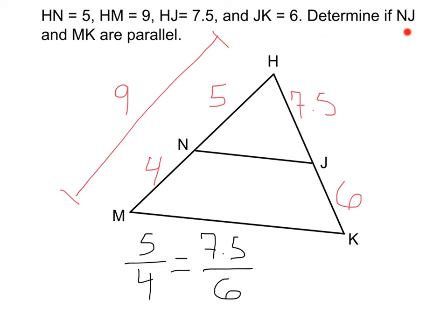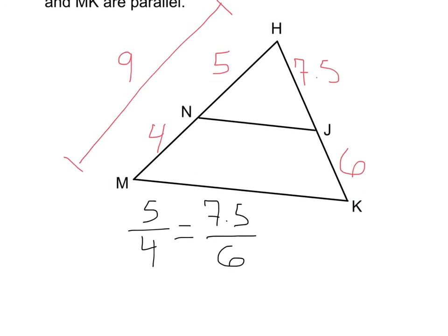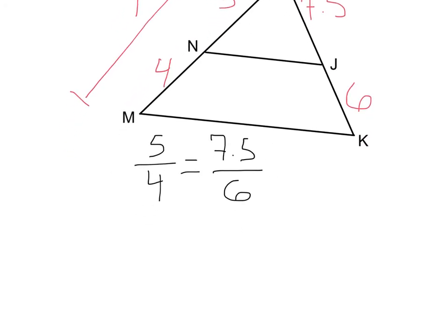Now our main goal is to determine if NJ and MK are parallel. We've set up a proportion here based on the triangle. So if this statement is true, that means we can determine that they are parallel. If it's false, then that means they are not parallel. So let's go ahead and do 5 divided by 4. That's going to be 1.25.